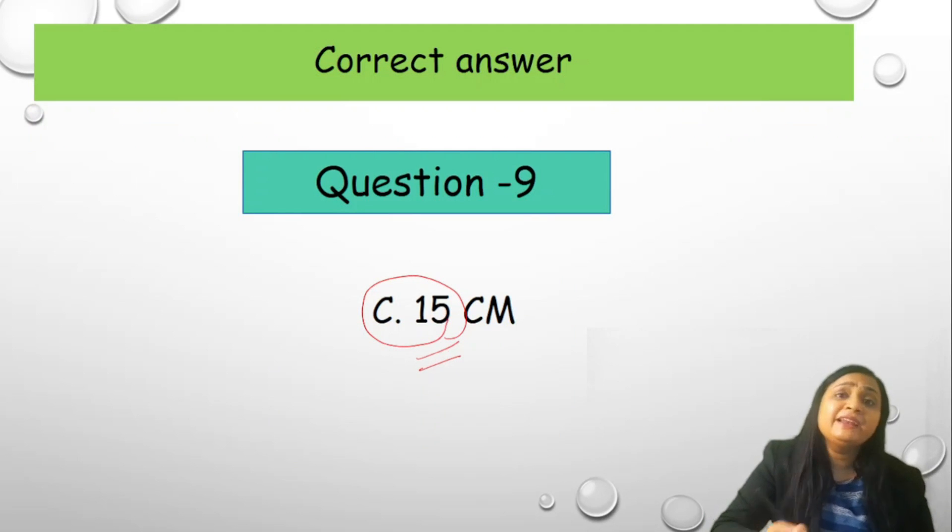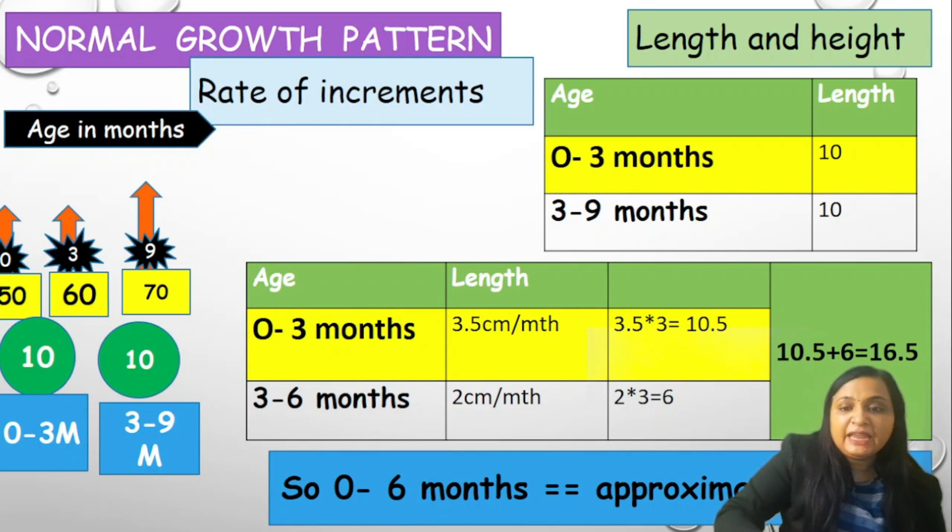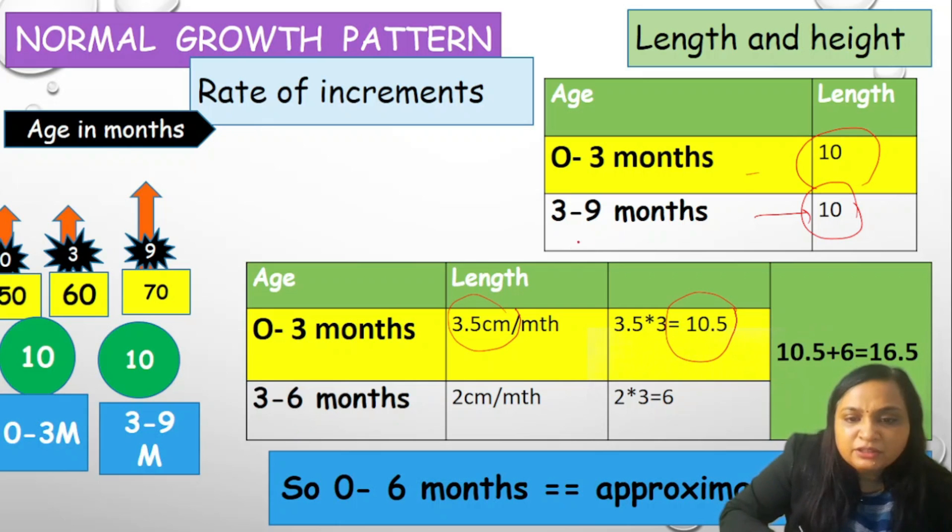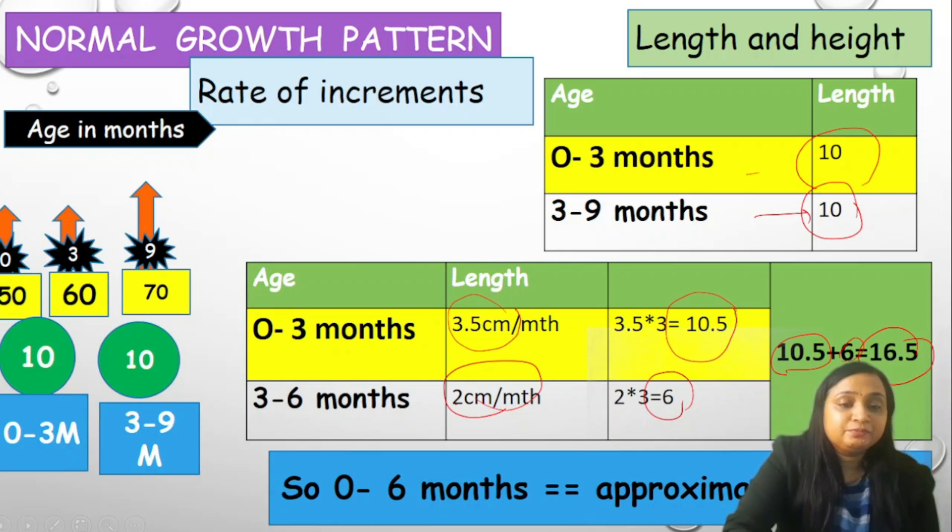Correct answer is C 15 cm. We will explain in the upcoming slide how it could be 15. We know that gain in the height in 0 to 3 months is 10 cm, and between 3 to 9 months it is 10 cm. Between 0 to 3 months it is 3.5 cm per month. First 3 months the gain of the height is 10.5. Between 3 to 9 months it is 10 cm, around 2 cm per month. 2 into 3 is 6. We have to just combine these two values 10.5 plus 6 around 16.5. Approximately 15 is your answer. I hope you all understood.